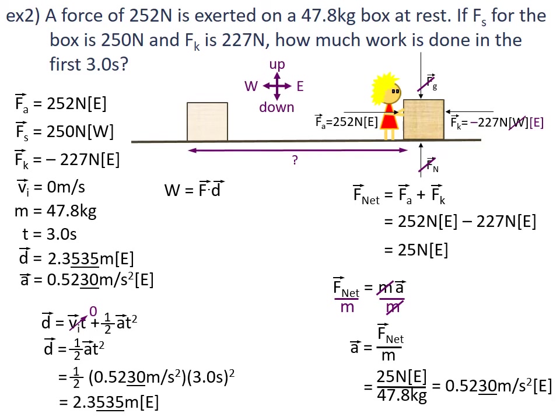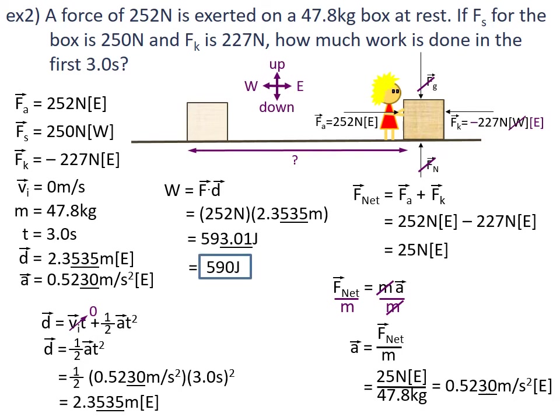Now I can get back to work equals force times displacement. The force that we are applying is 252 newtons, and the displacement is 2.3535 metres. When we punch that in, that gives us 593.01 joules. Corrected to two significant figures, the work done equals 590 joules.